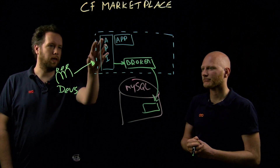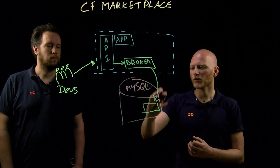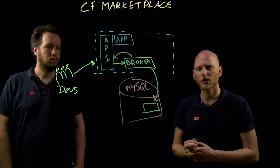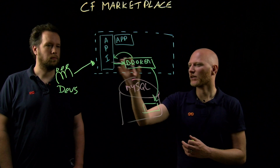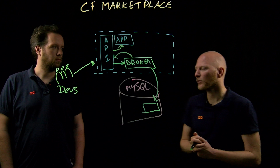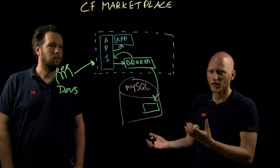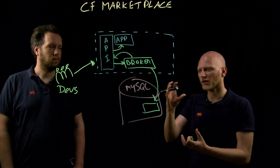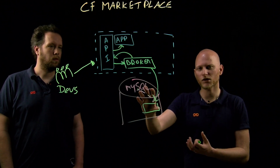So how do I now connect my app to this new database? When the broker creates the database and the user, it relays the information back to the API. Now you can use the CF CLI to bind this service to an app, and then the app gets the information fed from the API. If the app is an actual 12-factor app — so it gets all its configuration from environment variables — it will just use the environment variables and read them.